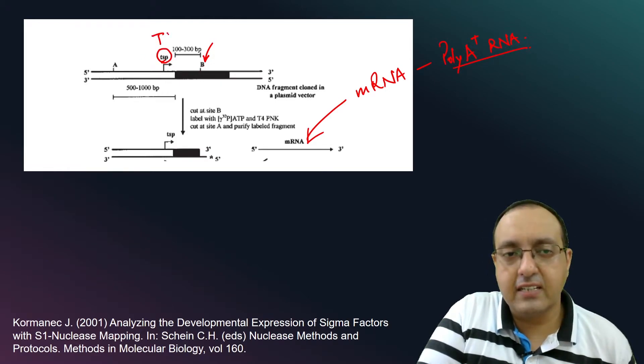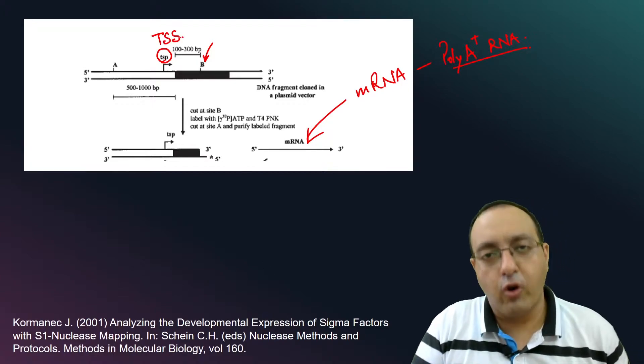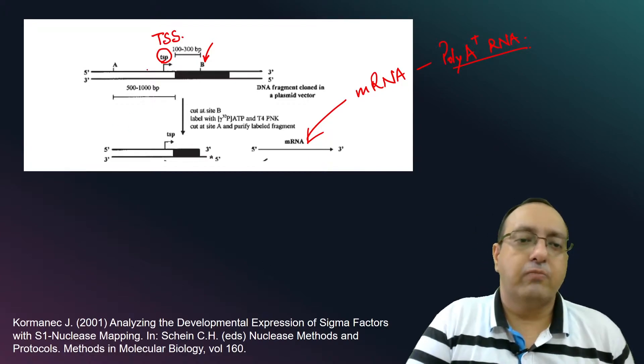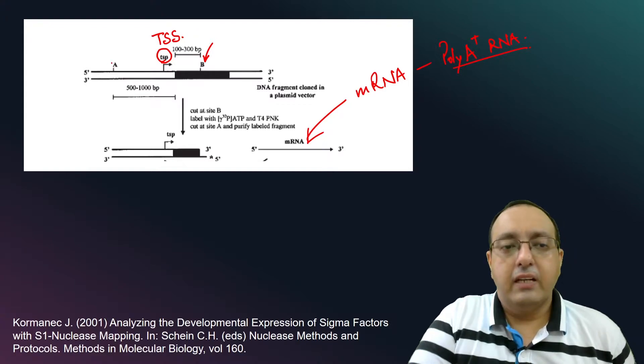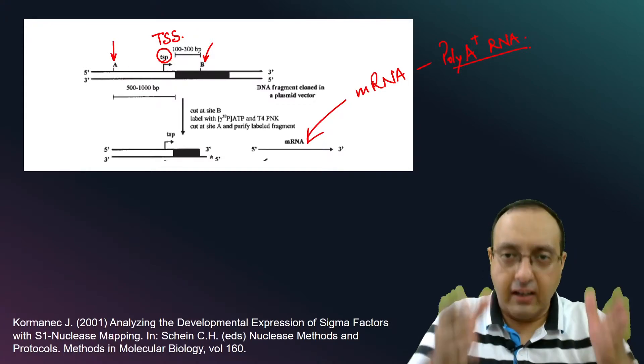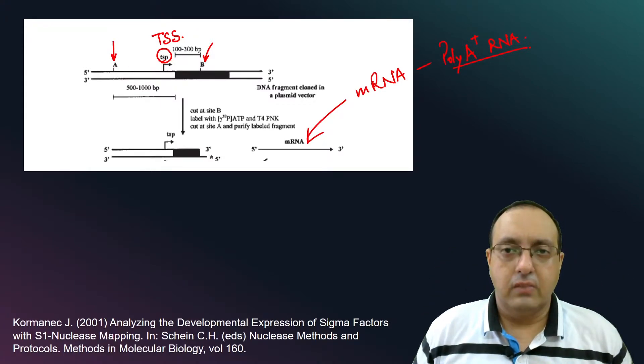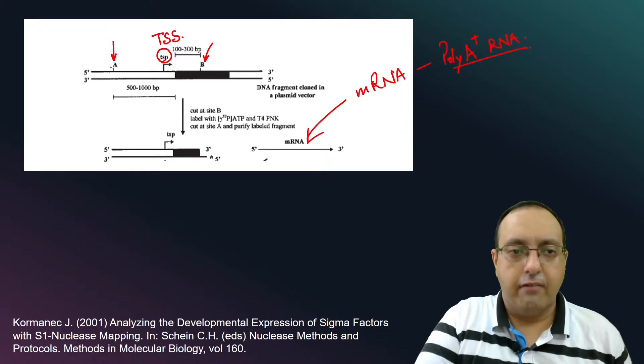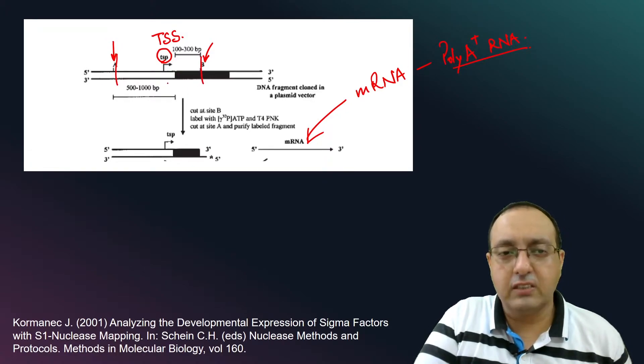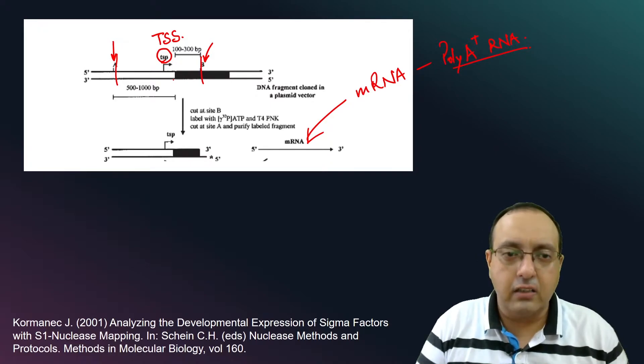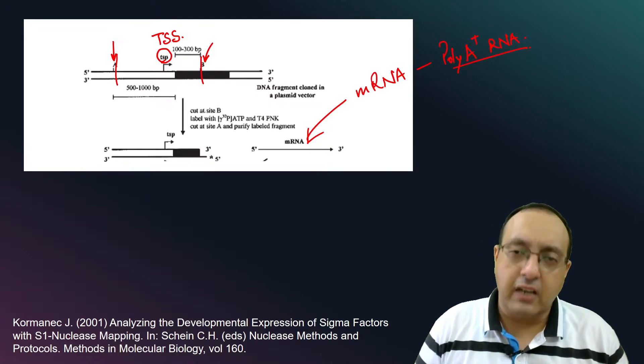So TSP is just TSS. It's transcription start point in this figure. And here we have another restriction site. So we cut this DNA fragment so that we have this fragment isolated. So it is a little bit farther from the transcription start site.